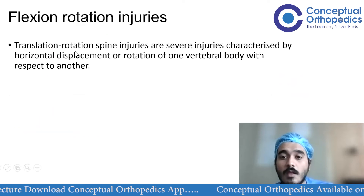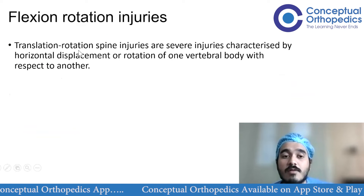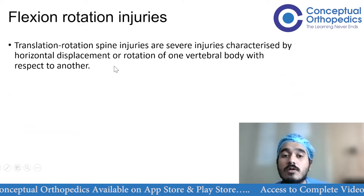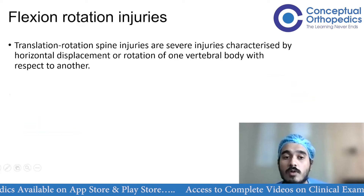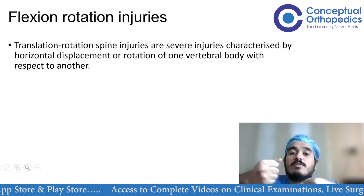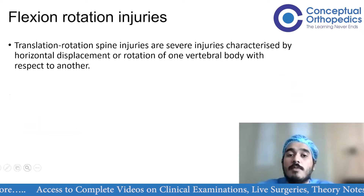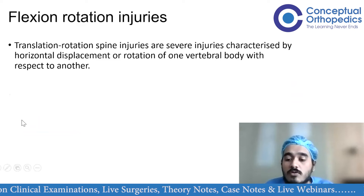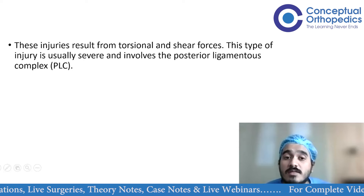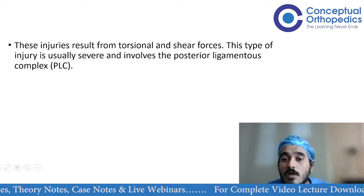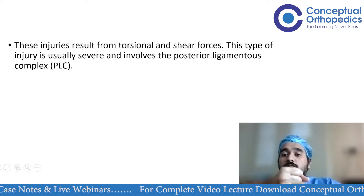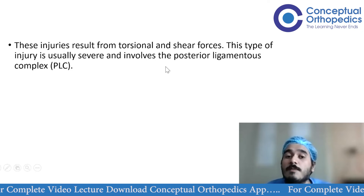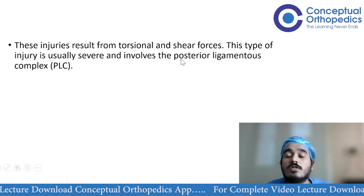Flexion rotation injuries are translation-rotation injuries to the spine — very severe injuries characterized by horizontal displacement or rotation of one vertebral body over another. They result from combined torsional and shear forces. These are three-column injuries that generally involve the posterior ligamentous complex.